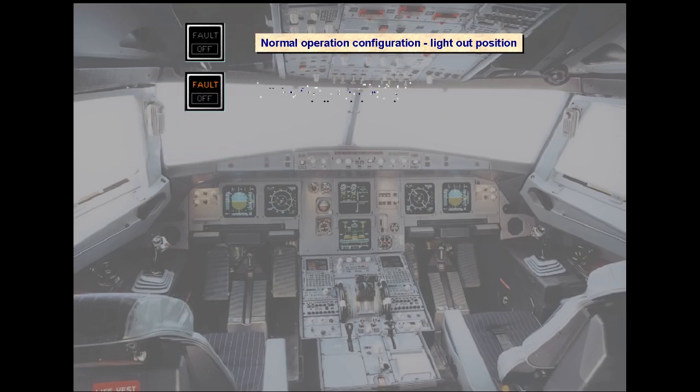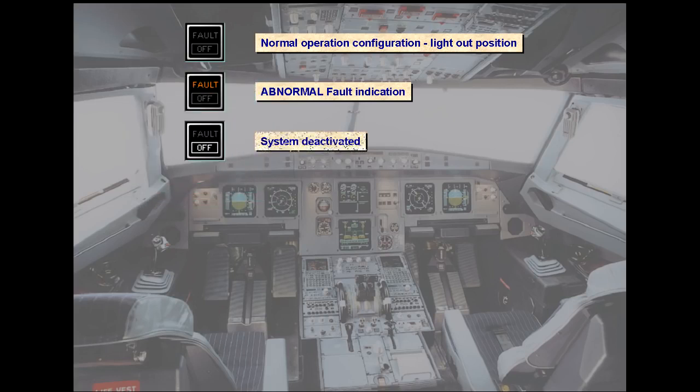Abnormal condition: amber fault light. This assists identification of the switch associated with an abnormal condition. Non lights-out switch position: white light. If normally the system should be operating and is deactivated, a white off light is illuminated.